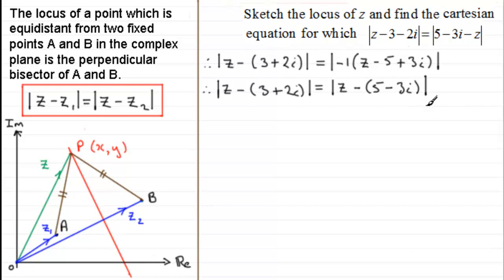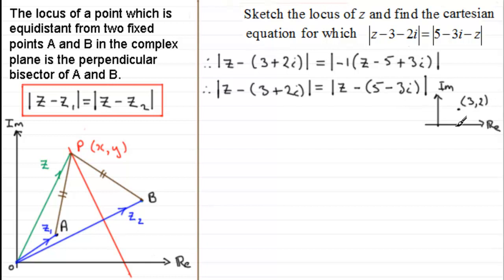To sketch this, we draw our imaginary axis and real axis. One point is at (3, 2) — three units across and two up — and the other is at (5, −3) — five across and three down. The perpendicular bisector passes between these two points, and any point on this line is the complex number Z.